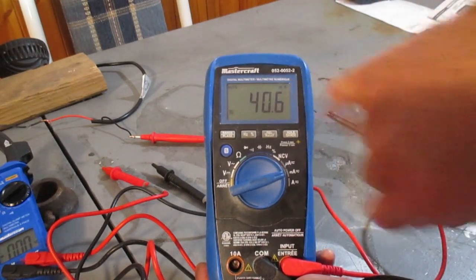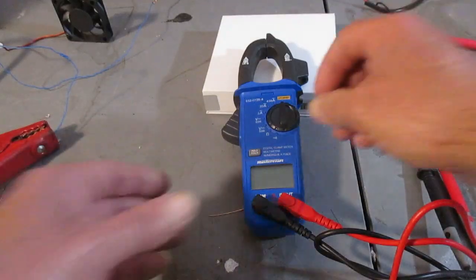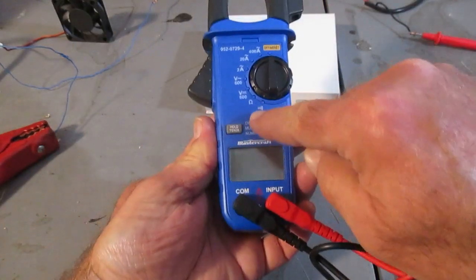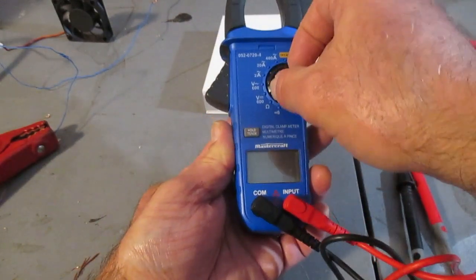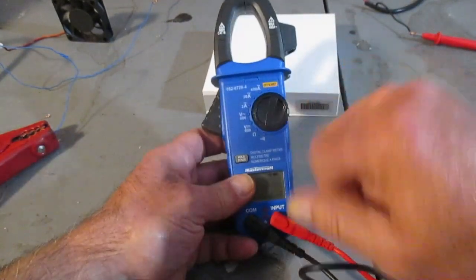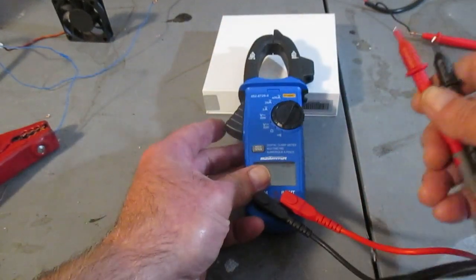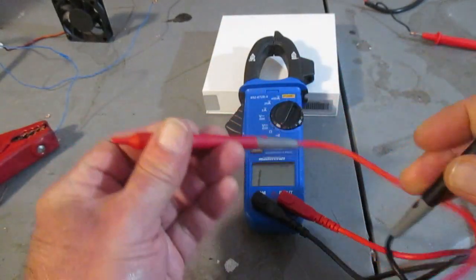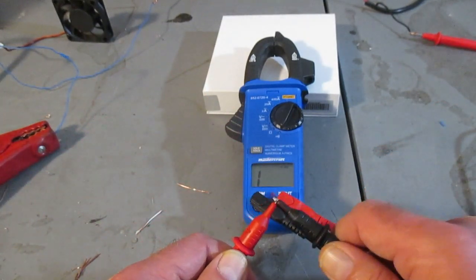This setting down here, that's for checking continuity. Basically to let you know if you have a short circuit. Just going to illustrate that quickly. I guess that probably symbolizes a little speaker, I don't know. But at any rate, if you're doing quick troubleshooting and you want to know if you have continuity in the circuit, you'll get that audible tone.